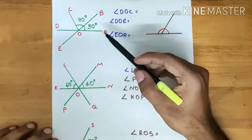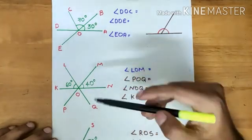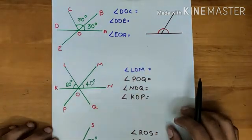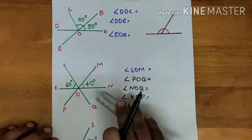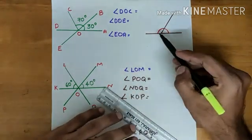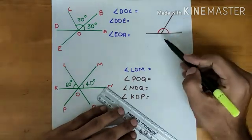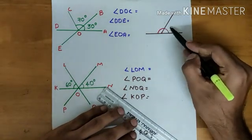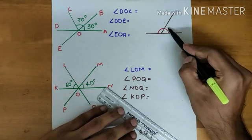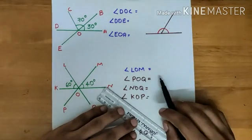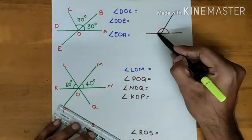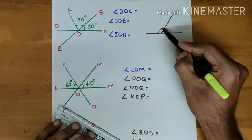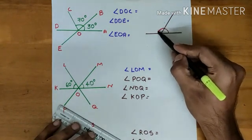Today we discuss three problems related to the concepts of linear pair and opposite angles. Before going to our problem, you can see a linear pair here. What is the sum of these two angles? The sum of two angles in a linear pair is always 180 degrees. So, the sum of these two angles will be 180 degrees.